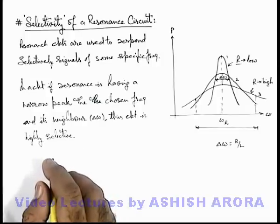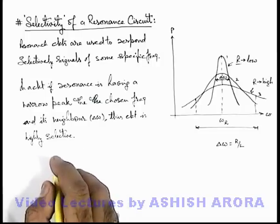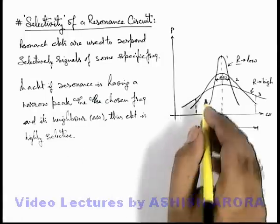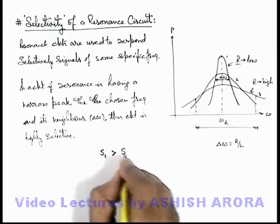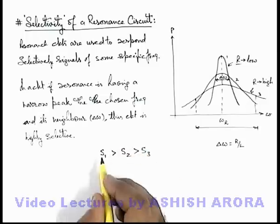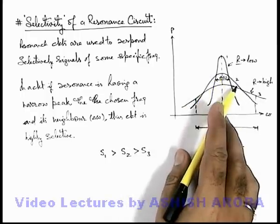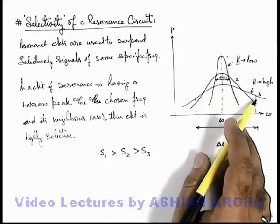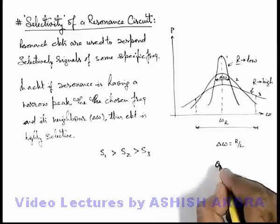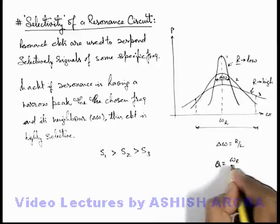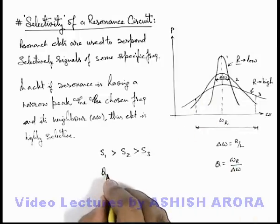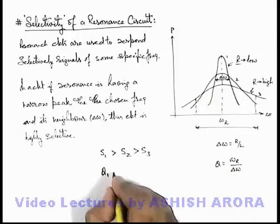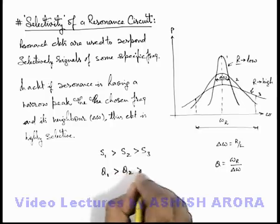If we talk about Q factor or selectivity, it is measured based on the peak. For circuit 1 we can write S1 is greater than S2, which is greater than S3. That means selectivity of circuit 1 is more than selectivity of circuit 2, which is more than selectivity of circuit 3. If we define the quality factor of a circuit, it is also defined as resonant frequency divided by bandwidth. So as the bandwidth decreases, the quality factor increases, and mathematically Q1 > Q2 > Q3.